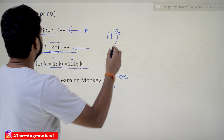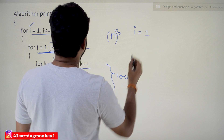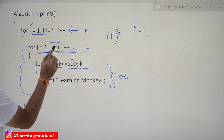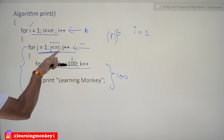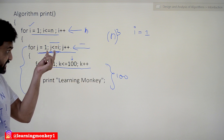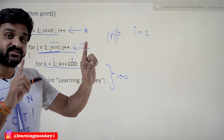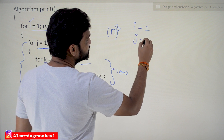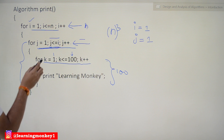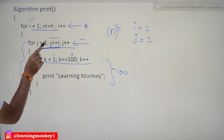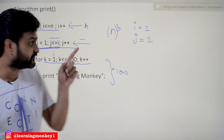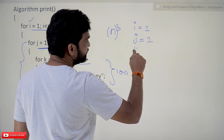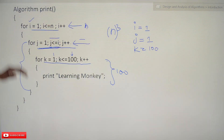When i = 1: j less than or equal to i means j less than or equal to 1, so the j-loop iterates 1 time. We enter the k-loop once, and k iterates 100 times. So the k-loop runs 1 × 100 = 100 times.